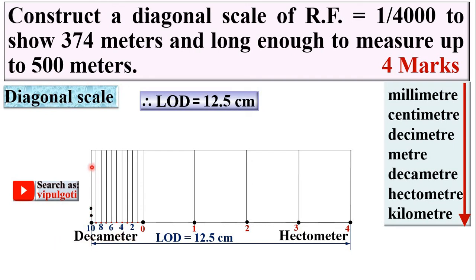Divide the height into 10 equal divisions, numbered 0, 2, 4, 6, 8, 10, and draw horizontal lines through all these points. Since the decameter is once again divided into 10 parts, each part represents meters — so write meter here.